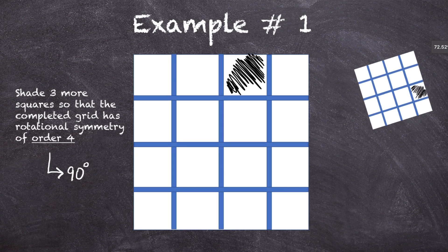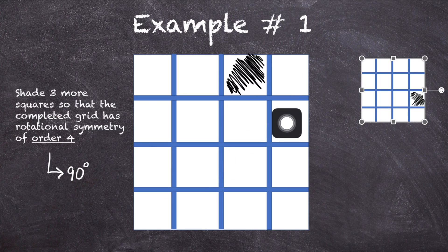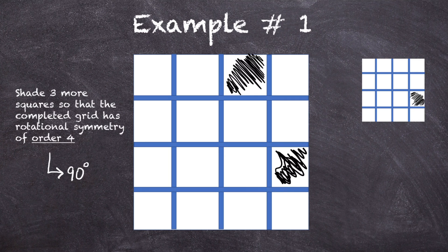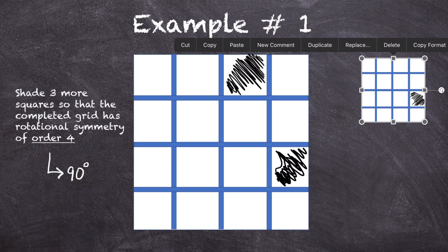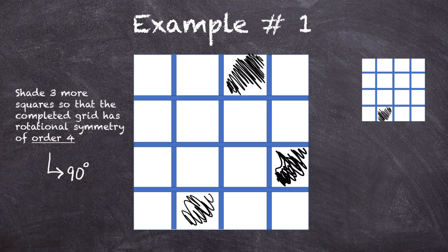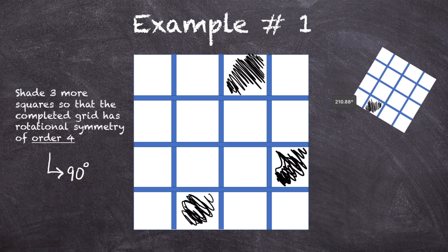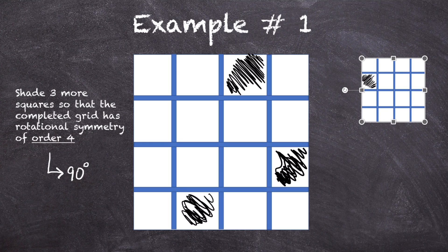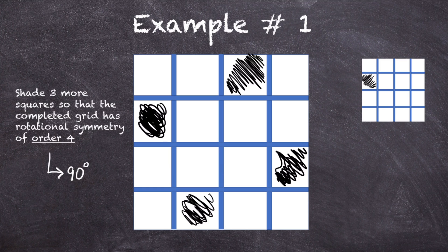Rotating 90 degrees clockwise, the shaded square ends up as the third square from the top right, so we shade that region. Continuing the rotation, the next position tells us the second square to shade. One more turn gives us the third new square to shade. The completed shape now has rotational symmetry of order 4, meaning in a full 360 degree rotation, we get this exact same shape a total of 4 times.